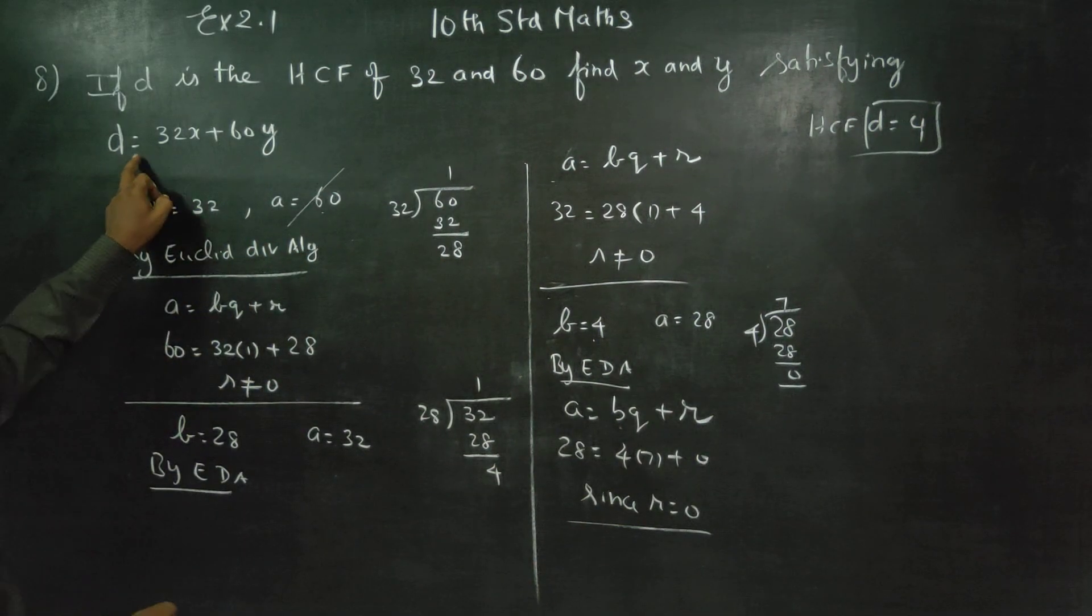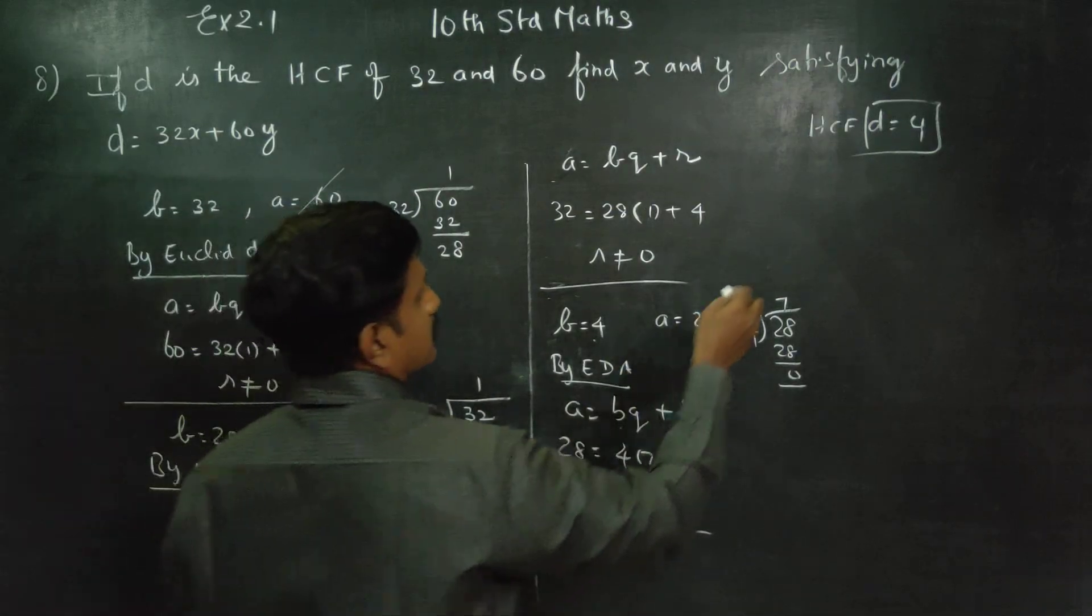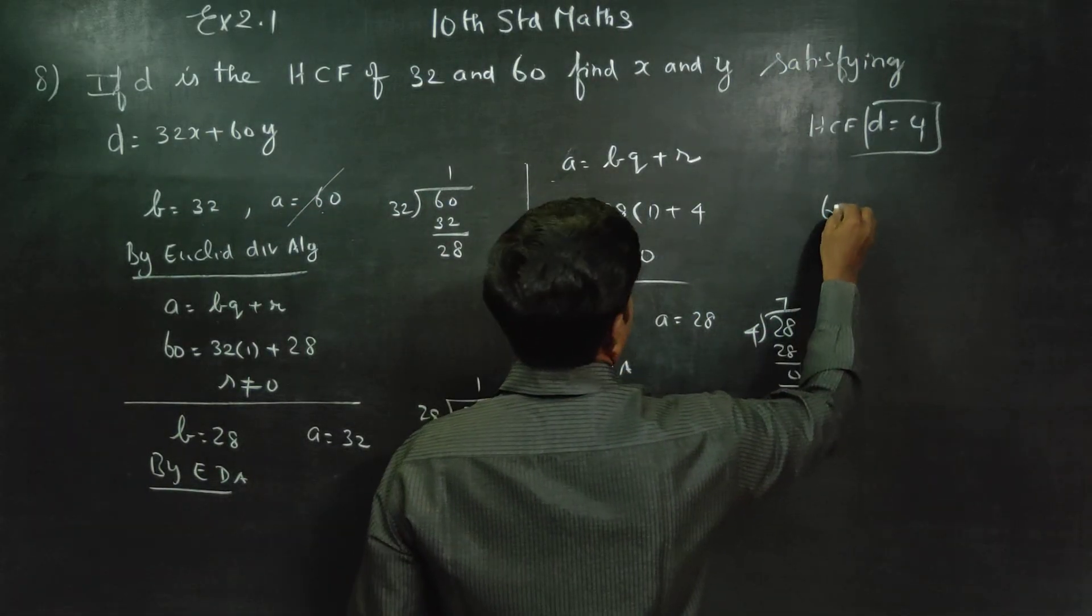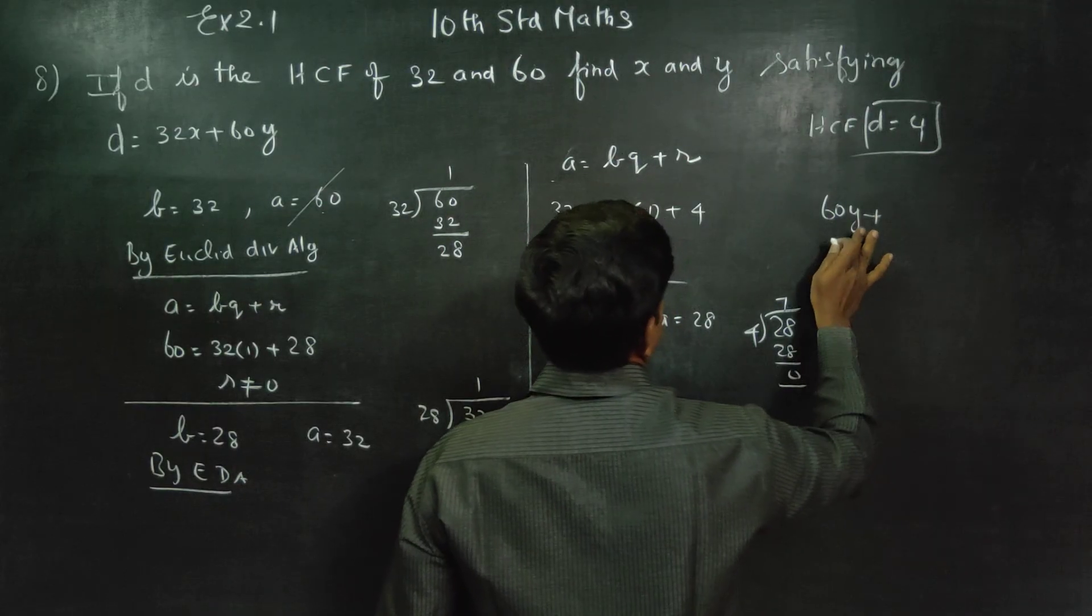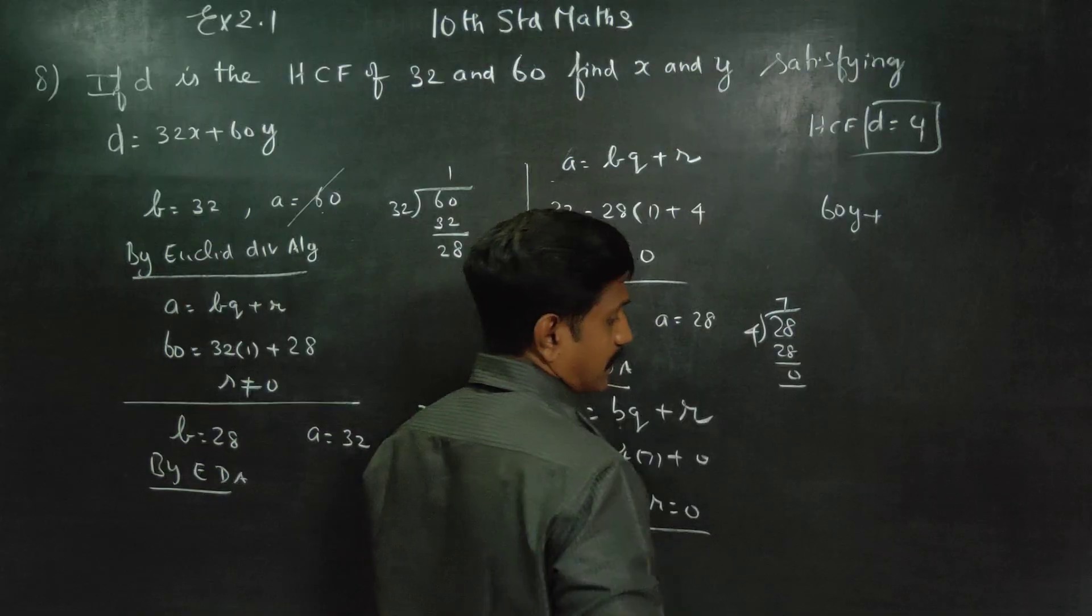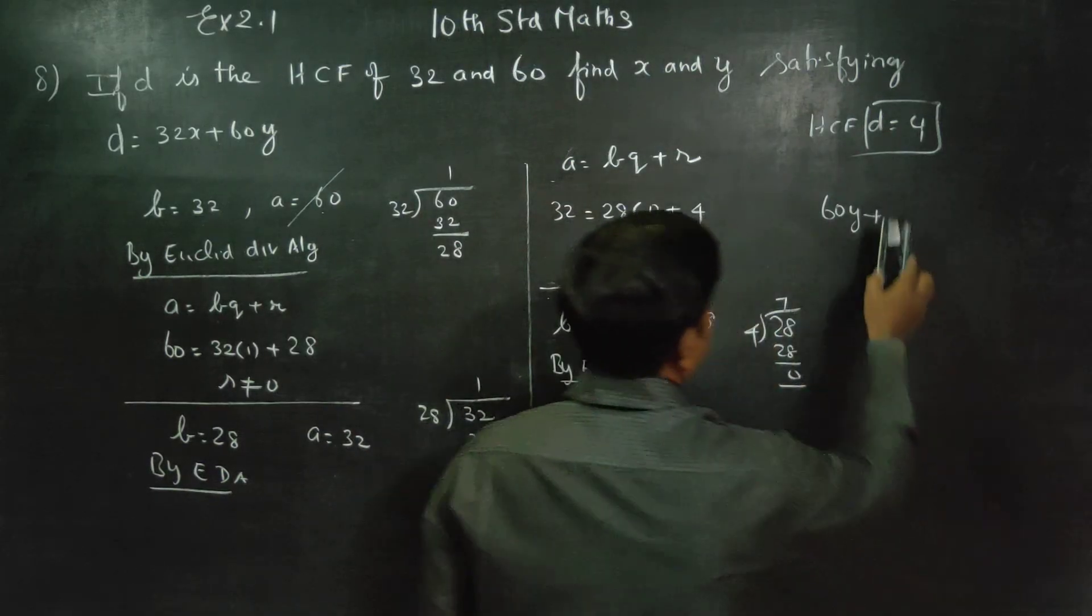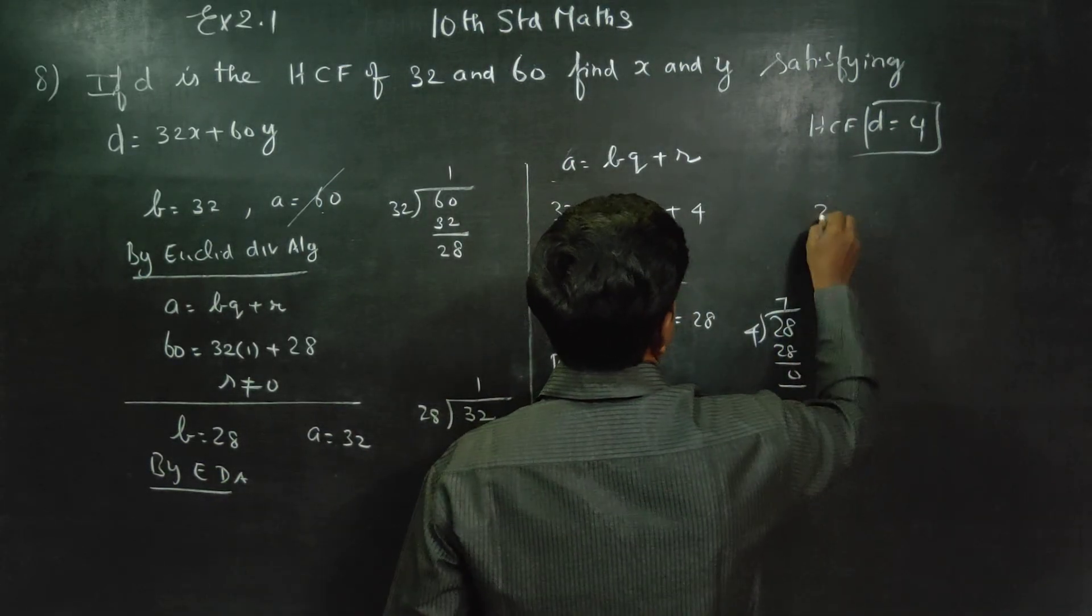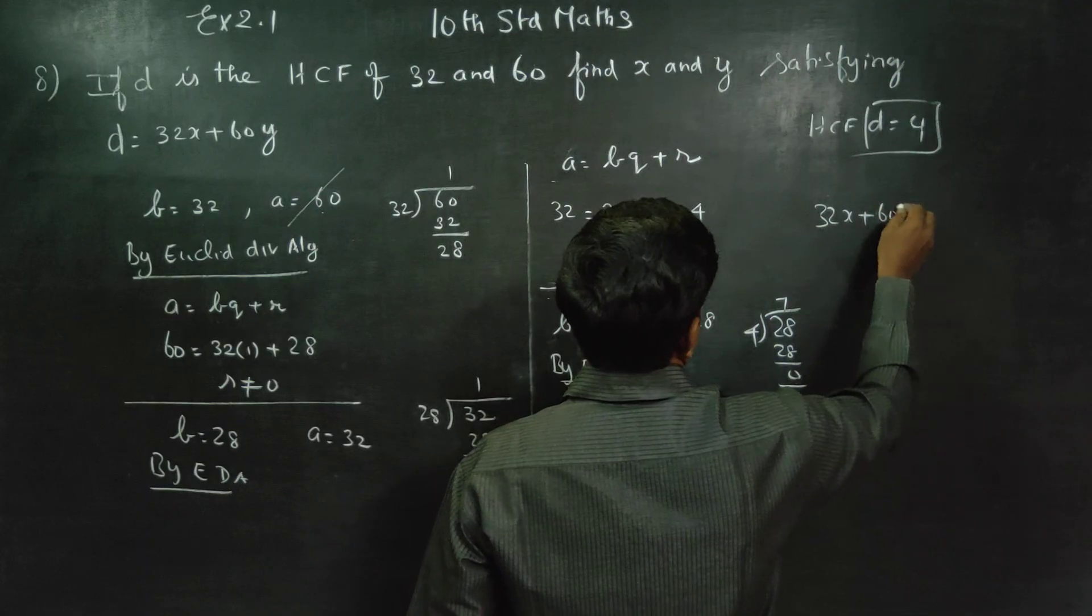After finding this answer, D is equal to 32x plus 60y. So, 32x plus 60y is equal to 4.